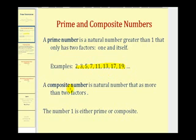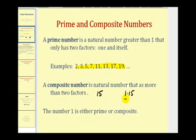A composite number is a natural number that has more than two factors. For example, the number fifteen has four factors, since one times fifteen equals fifteen and so does three times five. So the factors of fifteen are one, three, five, and fifteen — four factors, which is obviously more than two, therefore fifteen is a composite number.